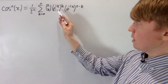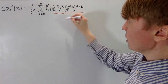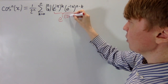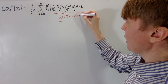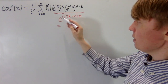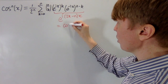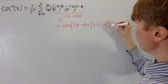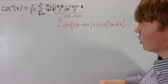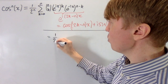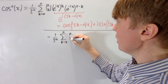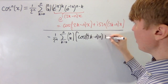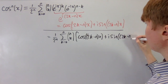Looking at the exponential terms — e^(ix) and e^(-ix) — we group them into a single power of e: ix·k plus (−ix)·(n−k) simplifies to i(2k−n)x. Then, using e^(iθ) = cos(θ) + i·sin(θ), we can write cos^n(x) as (1/2^n) times the sum from k=0 to n of C(n,k)·[cos((2k−n)x) + i·sin((2k−n)x)].